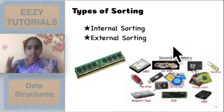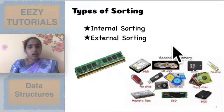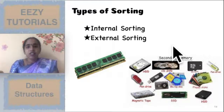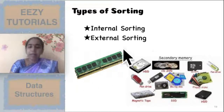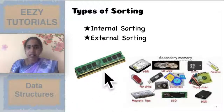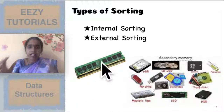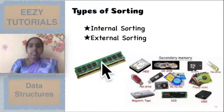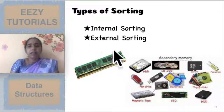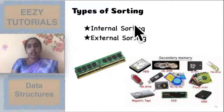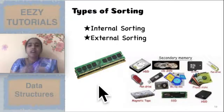Based on the size of the data, sorting algorithms are classified. If the entire data fits in your main memory — that is your random access memory — then that is called internal sorting.